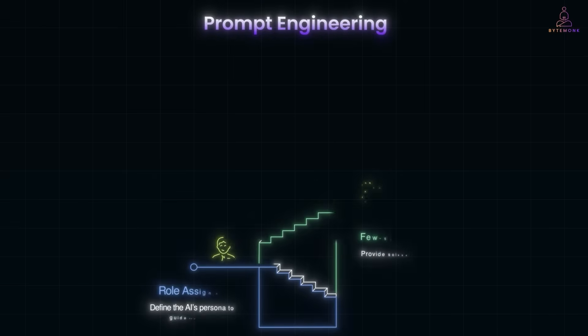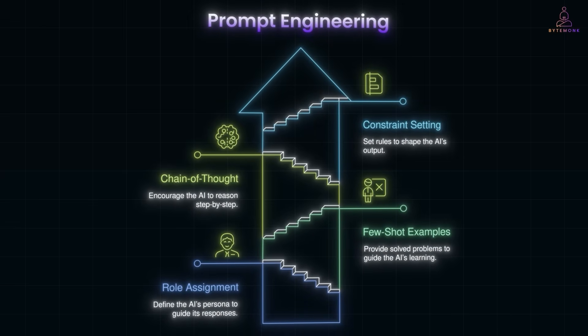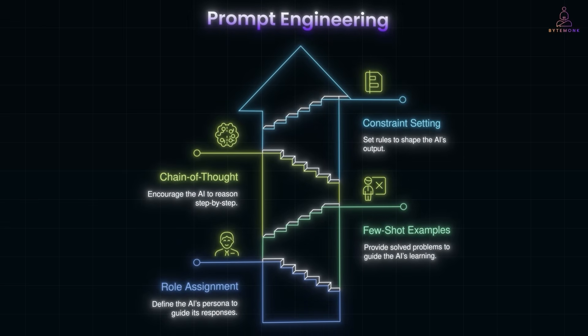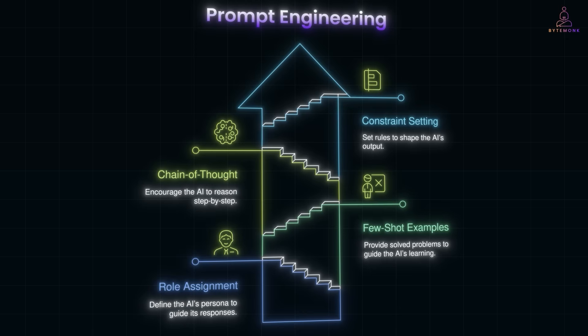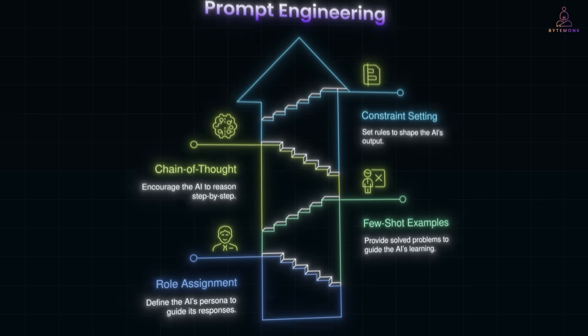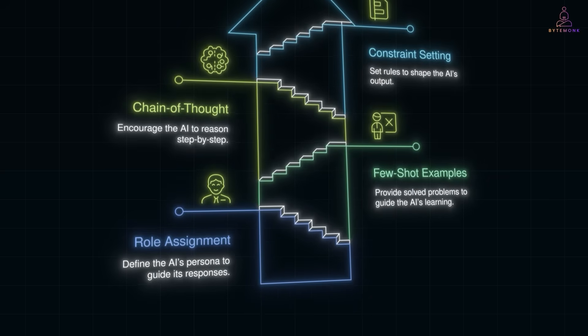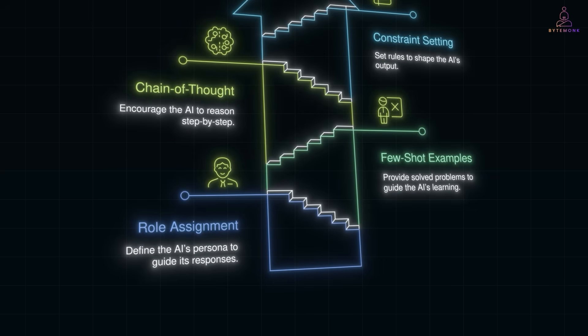Let's start with prompt engineering. Prompt engineering is basically about how you talk to the model — you shape the inputs so the model gives you the kind of response you want. There are a few common tricks. You can first set the role of the AI. For example: 'You are a senior software architect.' That one line changes the tone and depth of answers completely.